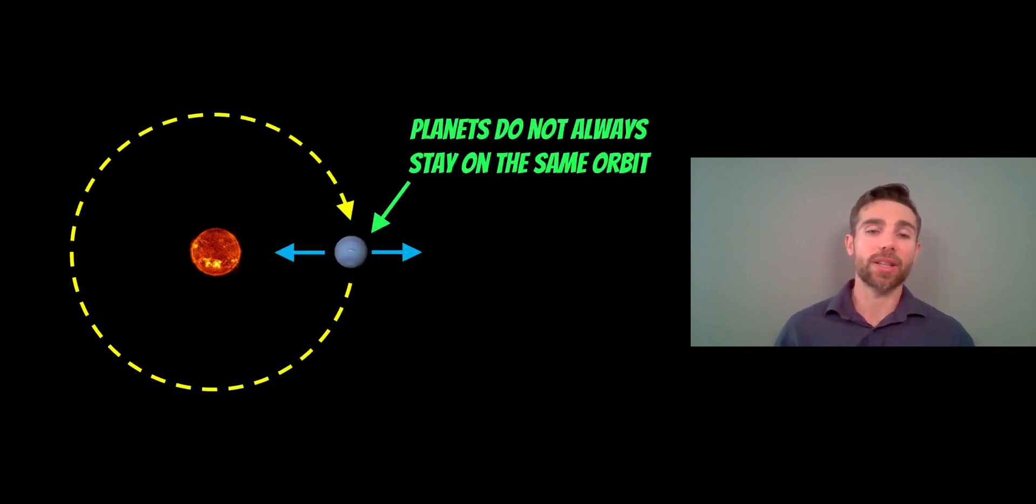If you didn't see any of the other videos, this is just a recap of planets and stars which you can skip if you want to. Planets do not always stay on the same orbit. They can wander about, move inwards, move out, or even get thrown out of the system altogether.